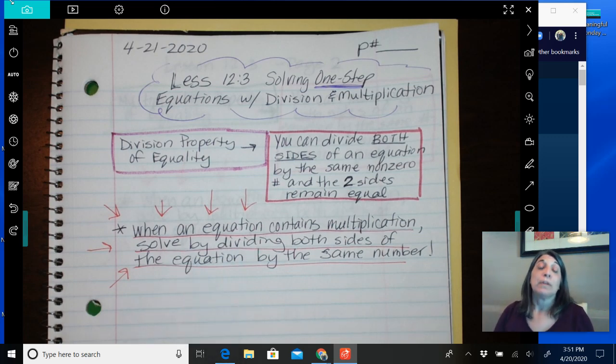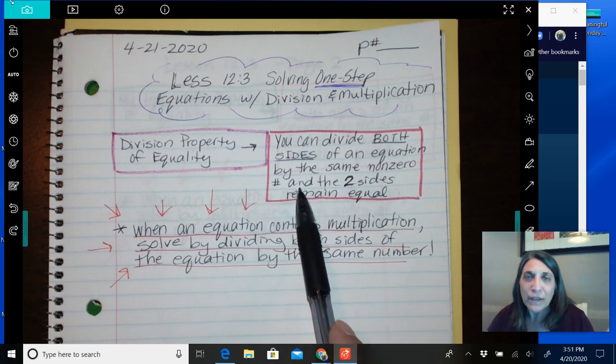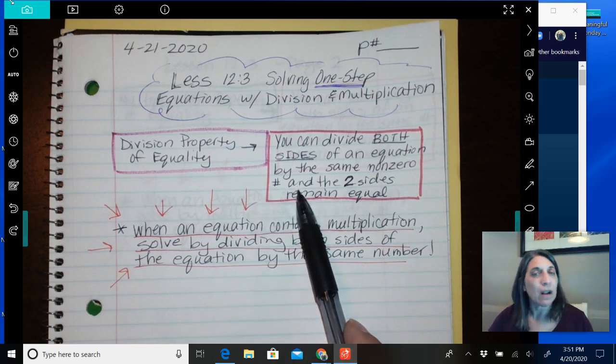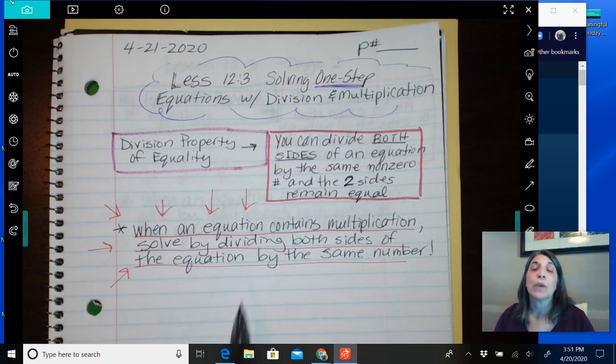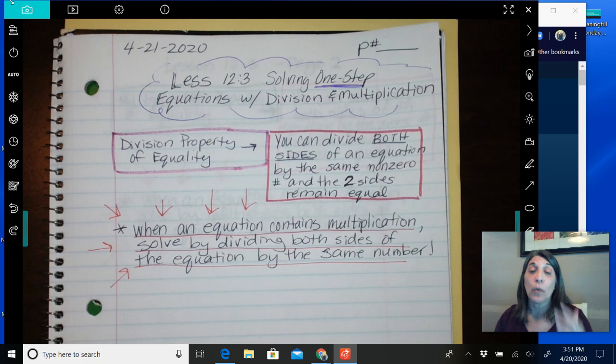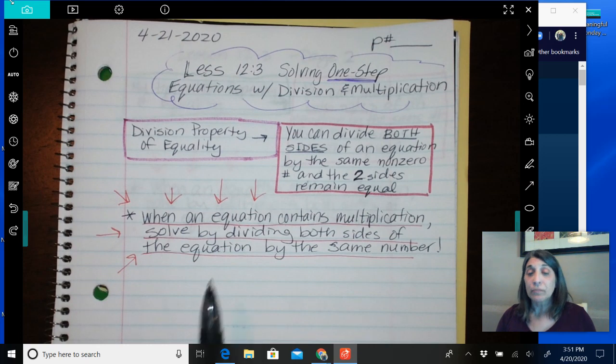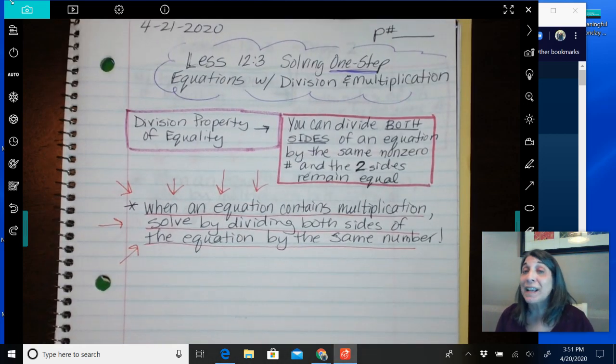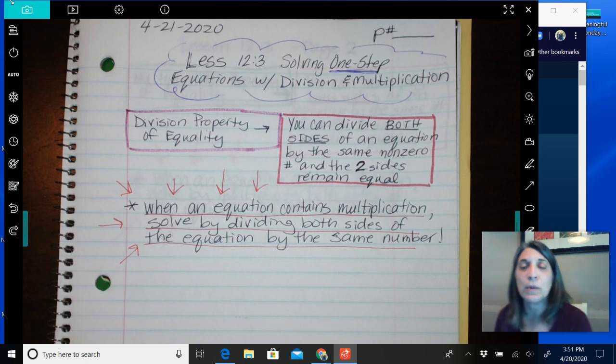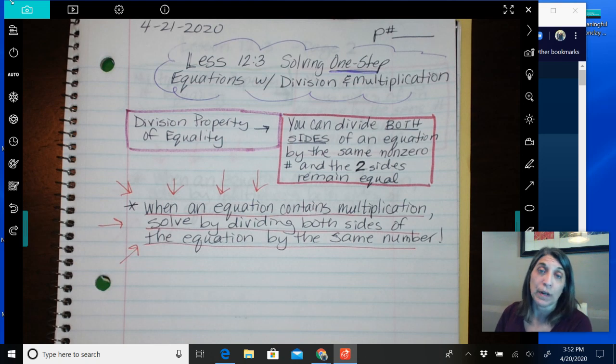So the reason that I underline this and put lots of red arrows is because this is the most important. This is like the formal property definition. You might run across in the future or hear a teacher talk about. But basically what the property is saying is when an equation contains multiplication, we're going to solve by dividing both sides of the equation by the same number. And we're going to go through some examples. It'll make sense, but this is really important. I would put some arrows, highlight it, use colors if you have it. But if your equation has multiplication in it, a multiplication relationship, which I'll show you what that means in a second, then in order to solve it, we're going to have to divide on both sides if it's a multiplication.